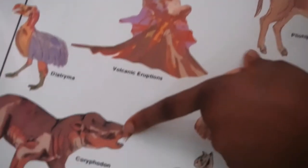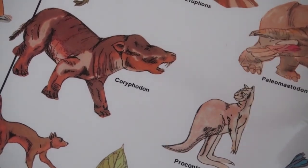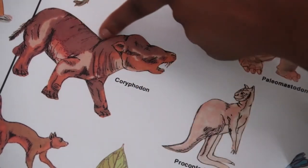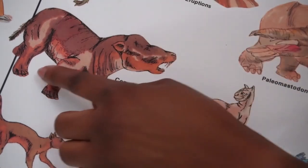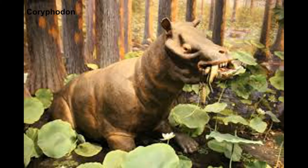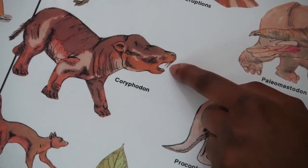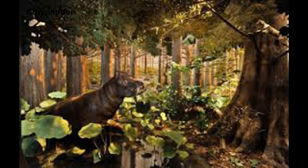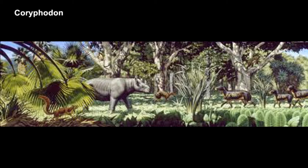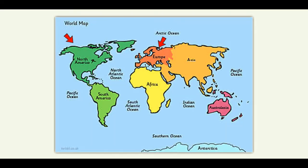The Coryphodon had a build similar to that of a modern pygmy hippo and most likely lived in the same manner. Its sturdy body grew to 8 feet in length and was supported by short legs and round elephant-like feet. Canine tusks had developed which the males used for fighting — very sharp. The Coryphodon lived near water, and marks found on its lower tusks suggest that it pulled up plants by the roots. The strong bones of these animals fossilized readily and remains have been found in both Europe and North America.